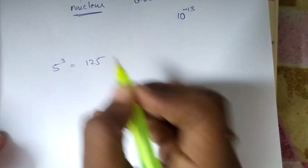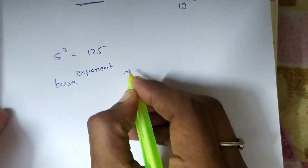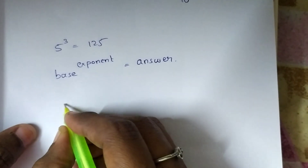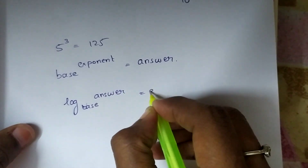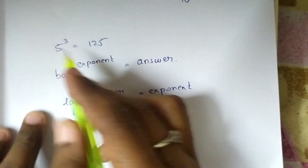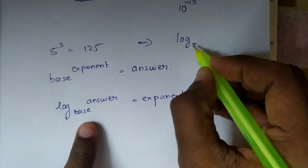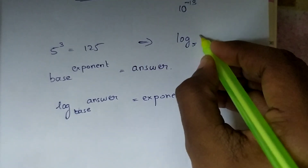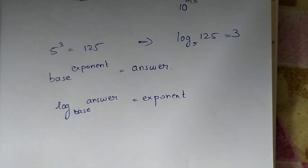I am going to tell you a trick — how to remember the conversions. We have to write: 3 is the exponent and 125 is the answer. In logarithm, the base stays as base, the answer goes here, and the answer is equal to the exponent. To write this in logarithmic form: log base 5 of 125 is equal to 3. That is the format to write logarithmic form from exponential form.